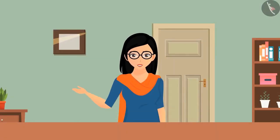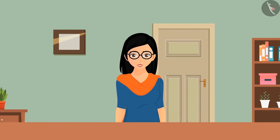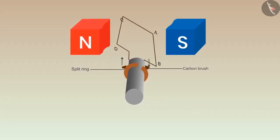You must be wondering how a DC generator works. In the starting of the video, we replaced the split ring with two complete rings. If we put it back, then we will get a DC current. These generators are known as DC generators.